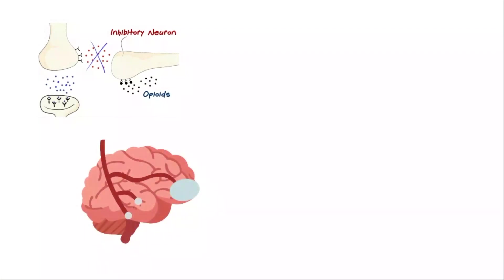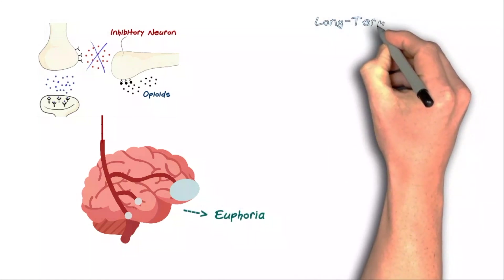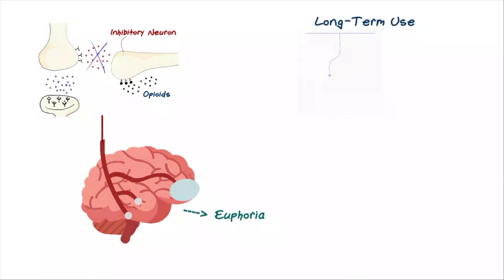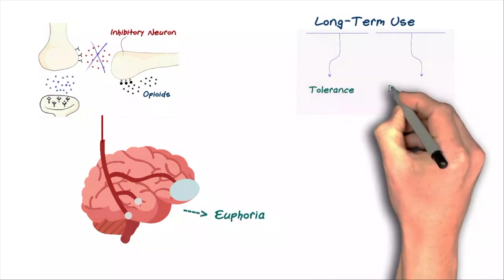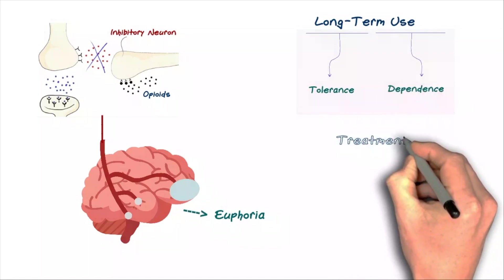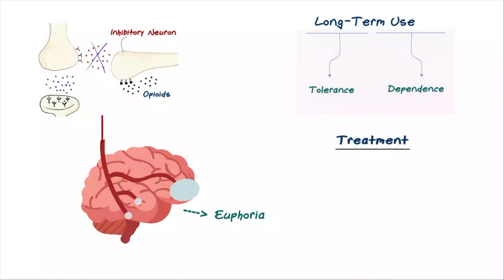Alright, as a quick recap, opioids stop inhibitory neurons from releasing inhibitory neurotransmitters, which allow dopamine to flood the ventral tegmental area, nucleus accumbens and prefrontal cortex and causing euphoria. Long term use can cause tolerance, which is the need for increasing doses to achieve the same effect, as well as dependence, which is the reliance on the opioid to function normally. The most effective treatment is a combination of therapy and medications with a lot of love and support from family and friends.